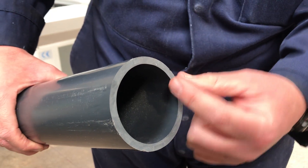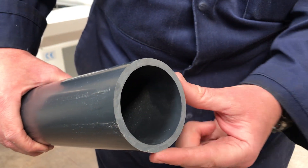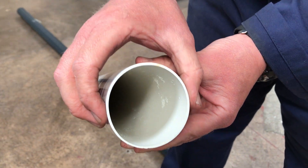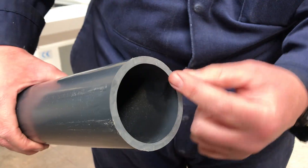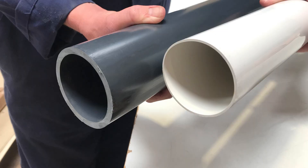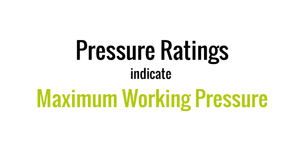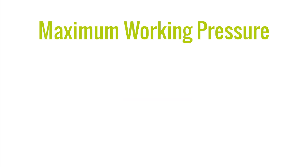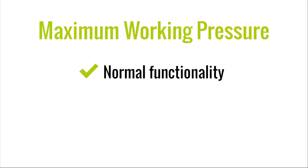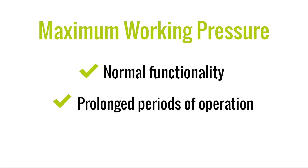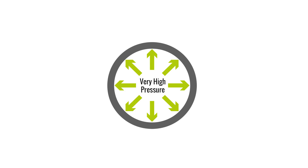This is why pressure pipe is generally more expensive than waste pipe, as there is a lot more material involved in the production of the product. All pressure pipe is rated for a maximum working pressure. The working pressure, or operating pressure, indicates the maximum pressure at which the pipe can be expected to function normally for prolonged periods. The pressure rating must be suitable for the requirements of your application.